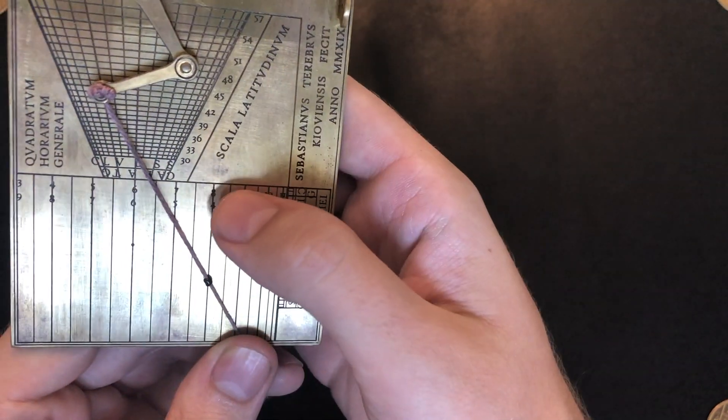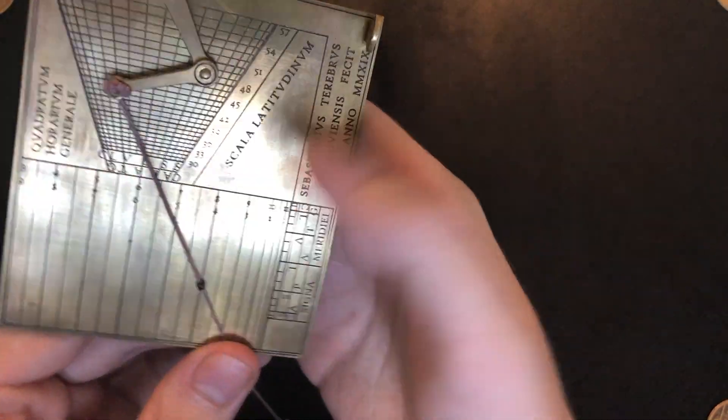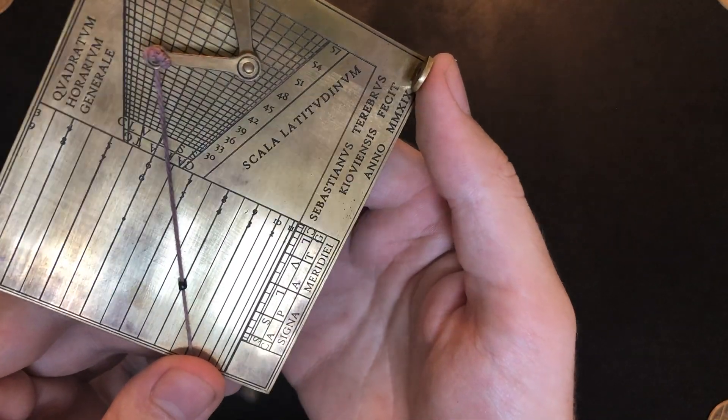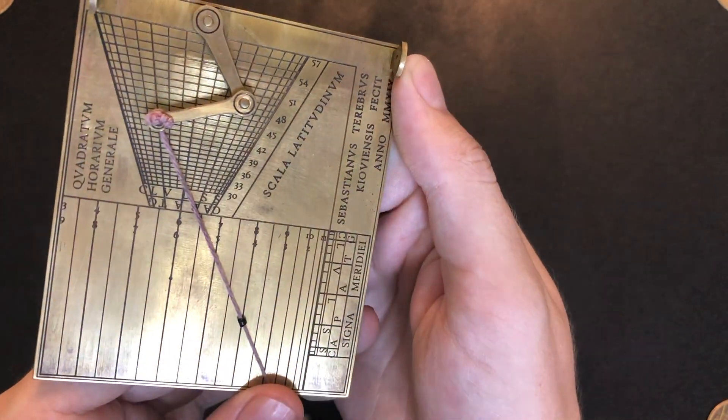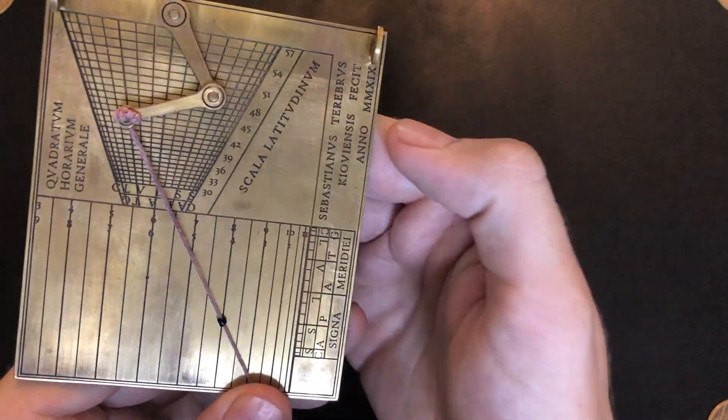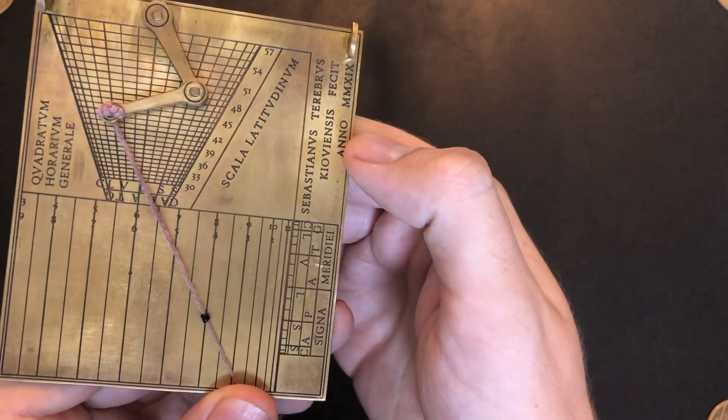So for example, this hour, it could either be 8 a.m. or 4 p.m. The sun has the same elevation at these two moments, simply 8 a.m. in the eastern portion of the sky and 4 p.m. in the western portion.